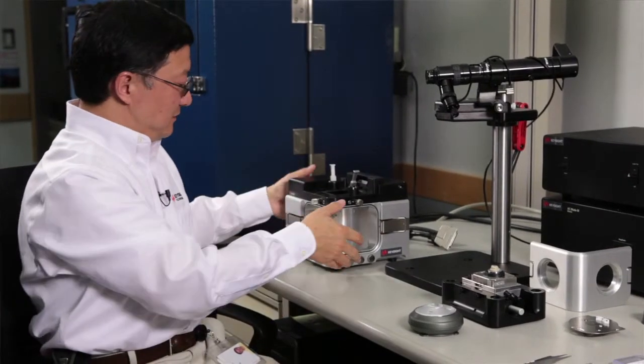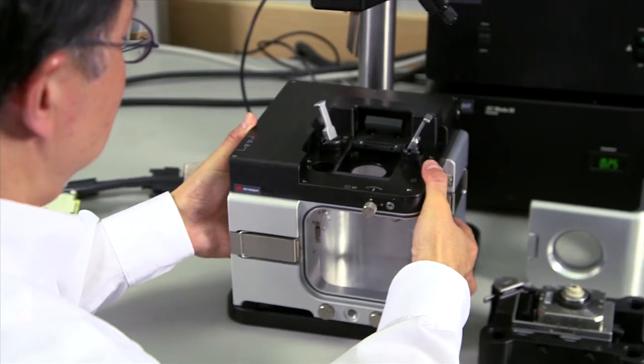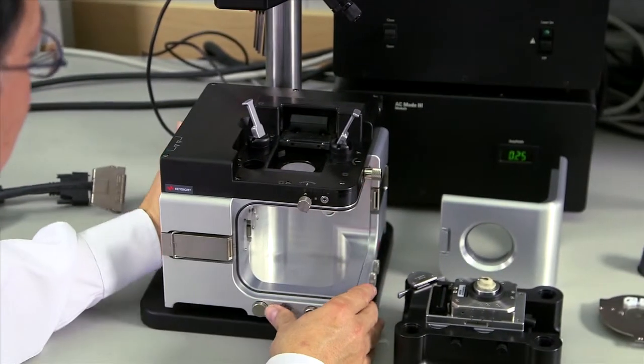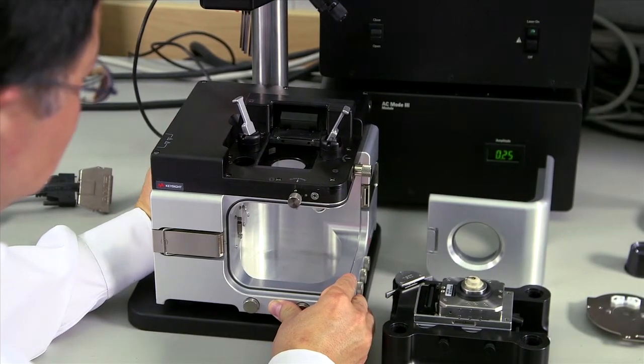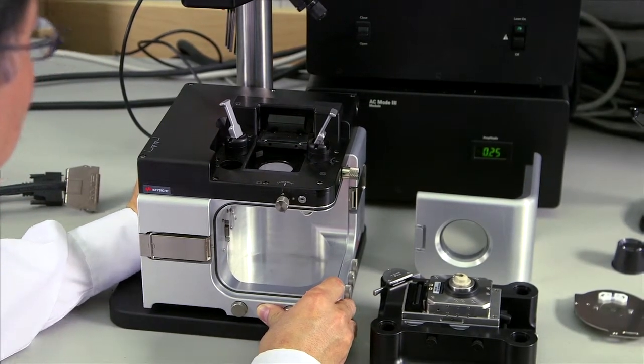The next is to set the AFM body on top of the base plate. And you can slide it back and forth until the legs fall into the four position holes in the base plate.